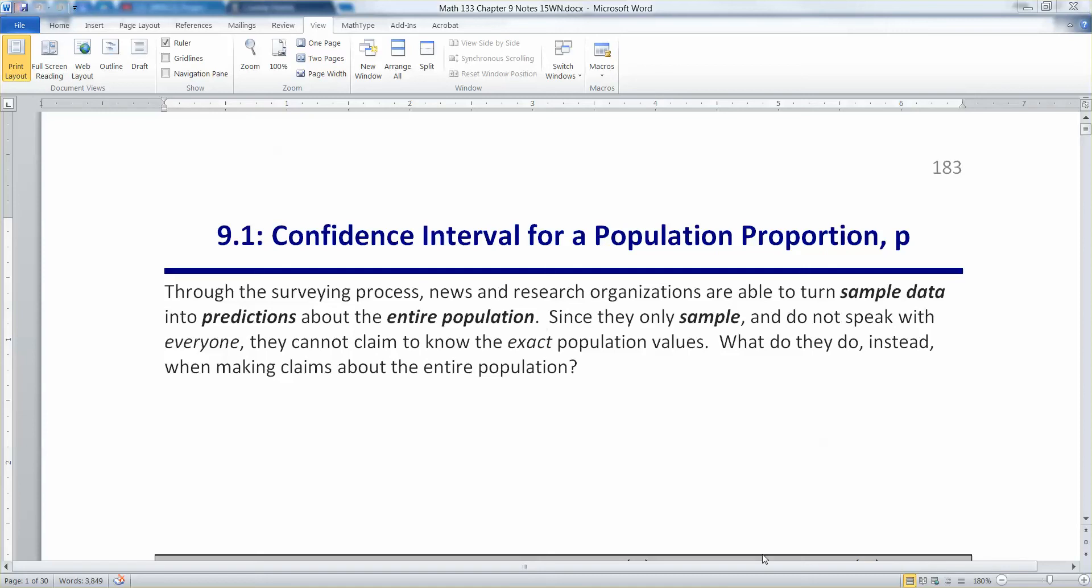And now we want to move on to section 9.1, which begins a much larger world mathematically speaking. We're really going to step into inference now in chapter 9. So let's remind ourselves of a couple of things. When you survey news organizations, research organizations, institutions in general, they're able to turn sample data into predictions about the entire population.